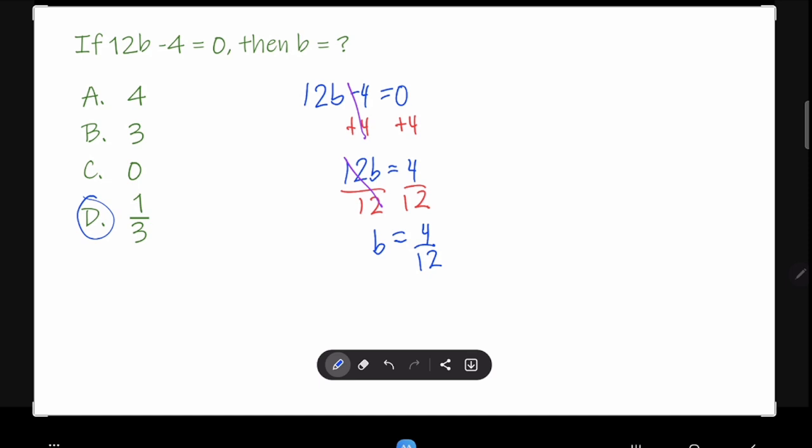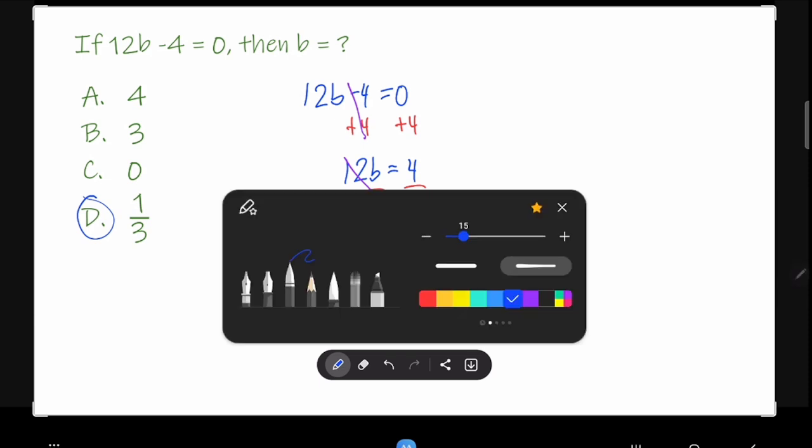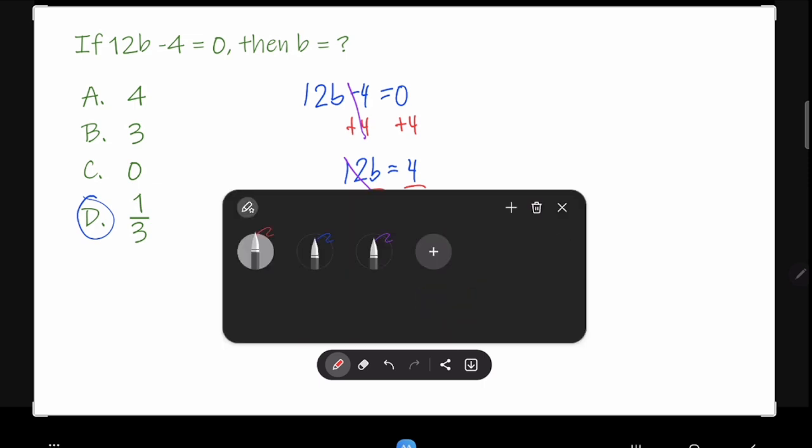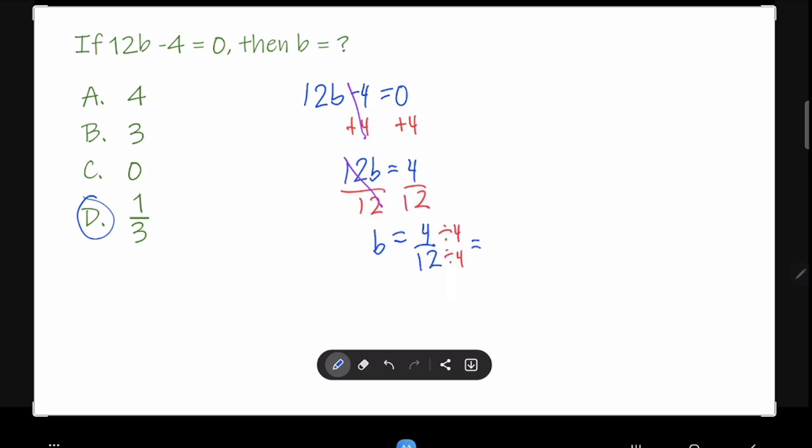Now, if it's a fraction, you have to make sure that it is in the lowest term. What does it mean by lowest term? Meaning the numerator and the denominator cannot be divided by a common number except for 1. Here in this case, the 4 and 12 is having a common divisor, which is 4. They are both divisible by 4. So you have to divide it.